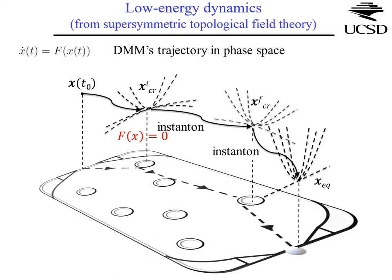Using a technique borrowed from supersymmetric topological field theory, we showed that the dynamics in this enlarged phase space — which grows linearly with the number of degrees of freedom — doesn't wander arbitrarily but goes through what we call instantonic trajectories: specific classical trajectories connecting critical points, i.e., points where the flow vector field is zero. The system starts from an initial condition, falls close to the nearest critical point, then tunnels in Euclidean space to the next critical point, and so on until a solution is found.